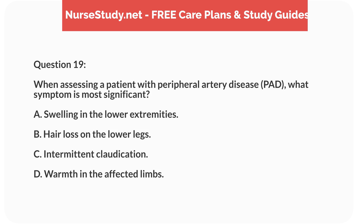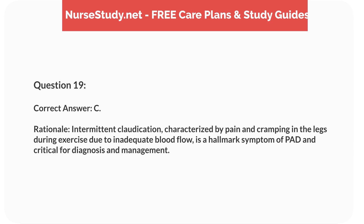Question 19. When assessing a patient with peripheral artery disease (PAD), what symptom is most significant? A. Swelling in the lower extremities. B. Hair loss on the lower legs. C. Intermittent claudication. D. Warmth in the affected limbs. Correct answer: C. Rationale: intermittent claudication, characterized by pain and cramping in the legs during exercise due to inadequate blood flow, is a hallmark symptom of PAD and critical for diagnosis and management.